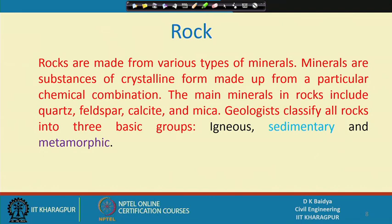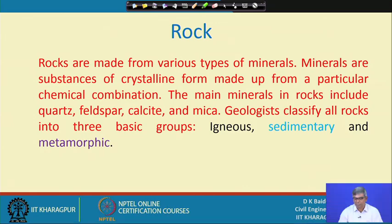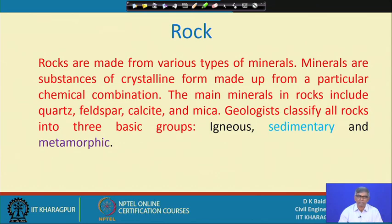Rocks are made up from various types of minerals, and minerals are substances of crystalline form made up from a particular chemical combination. The main minerals found in rocks are generally quartz, feldspar, calcite, and mica. Geologists classify all rocks into three basic groups: igneous rock, sedimentary rock, and metamorphic rock, which have already been shown in the rock cycle.